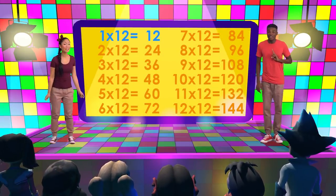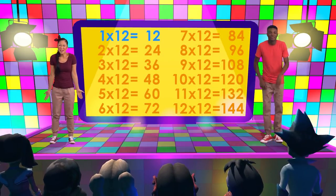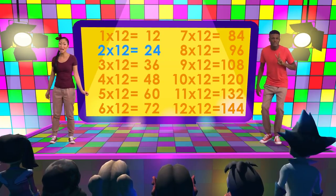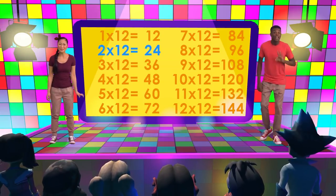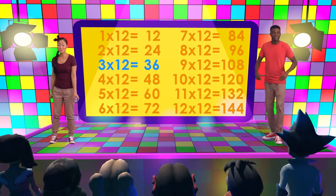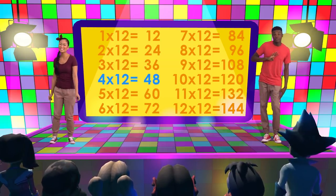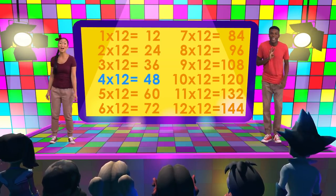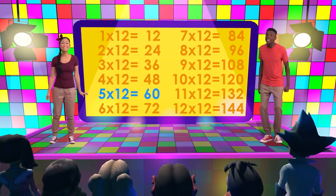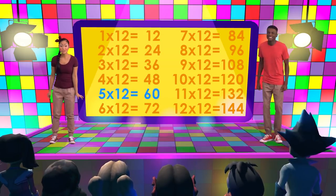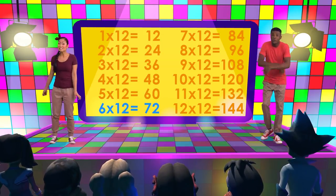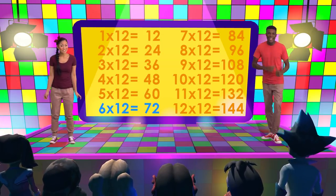1 times 12 is 12. 2 times 12 is 24. 3 times 12 is 36. 4 times 12 is 48. 5 times 12 is 60. 6 times 12 is 72.